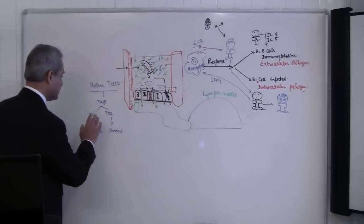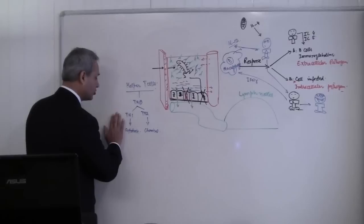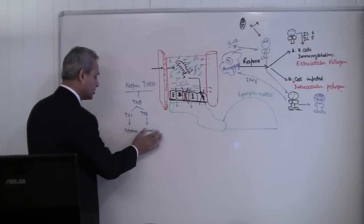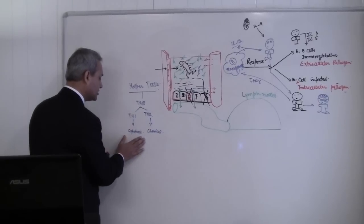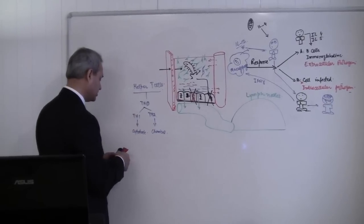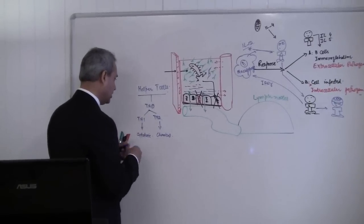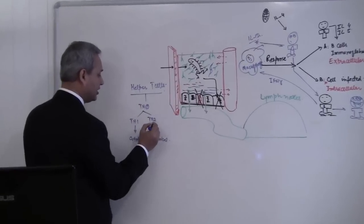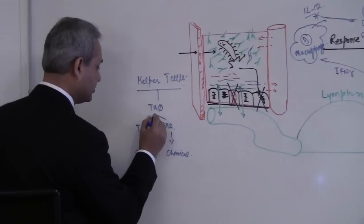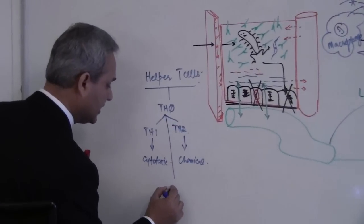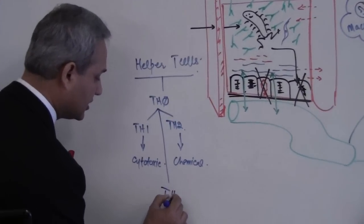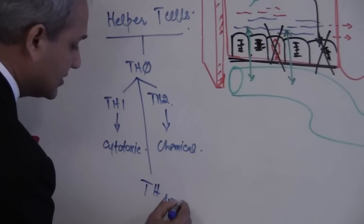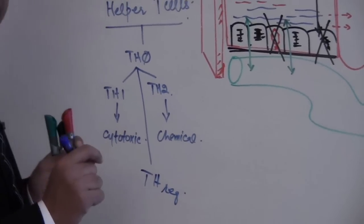T helper 0 going to T helper 1 and T helper 2 — chemical reaction, cytotoxic reaction. We also have T helper regulatory cells, known as Treg.